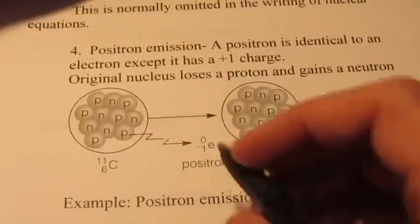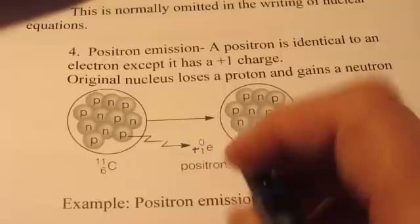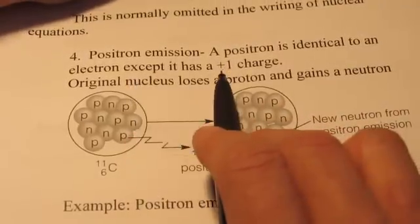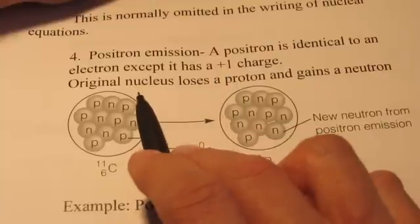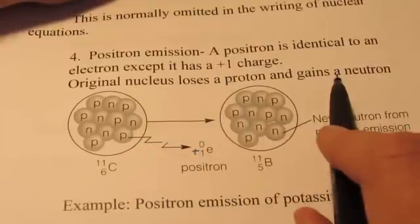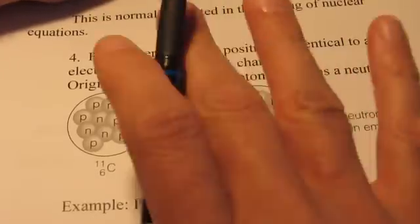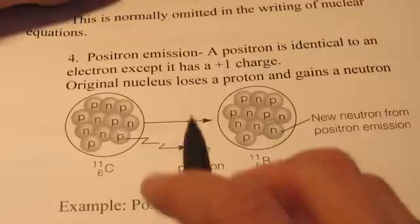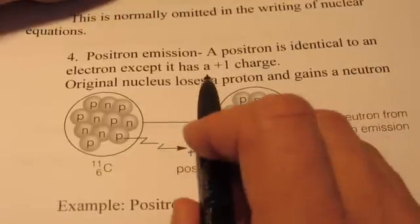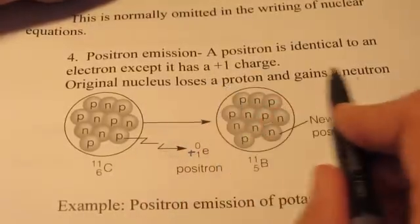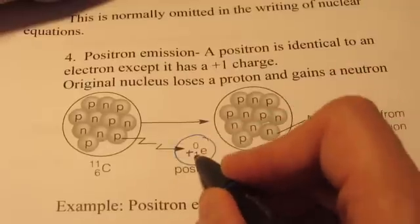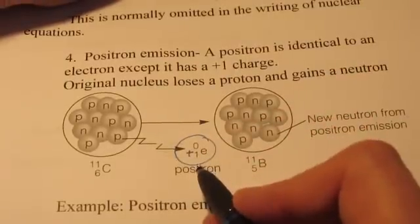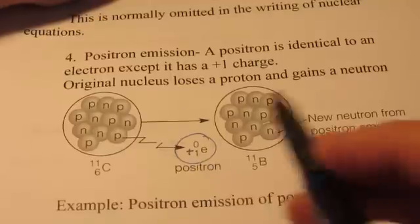Okay, once in a while you'll run into positron emission. And in positron emission, it's identical to an electron, except you're kicking off a positive charge instead of a negative charge. So the original nucleus will lose a proton and it will gain a neutron. So it's sort of like beta emission. That's the opposite though. You see, instead of a neutron turning into a proton, we now have a proton turning into a neutron. So we need to kick out a positively charged particle. So again, it's moving at a very high rate of speed, so it carries quite a bit of energy with it.